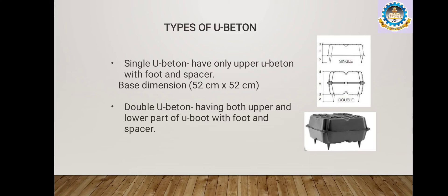U-boot Beton consists of two different types: single U-boot Beton and double U-boot Beton. Single U-boot Beton is generally used when laying single reinforced slabs, whereas double U-boot Beton is used for laying double reinforced slabs. Single U-boot Beton has only an upper unit with foot and spacer, and has a base dimension of 52 cm x 52 cm. Double U-boot Beton has both upper and lower parts with foot and spacer — like two boxes closed against each other. The spacer has a sharp edge that fixes into the lower reinforcement to prevent the U-boot Beton from moving aside when concrete is placed.